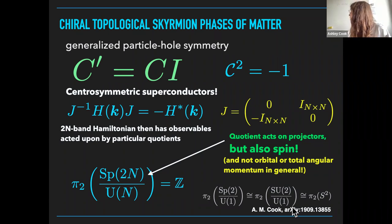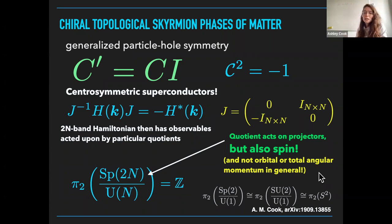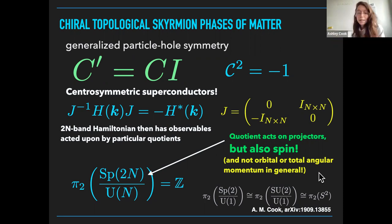For people who think about local moment models, if you consider the smallest case n = 1, the quotient takes a specific form, and there's an isomorphism from Sp(2) to SU(2). For those who think about the SU(2) Heisenberg model, it might be interesting to think about a generalization not to SU(n) but instead to Sp(n).